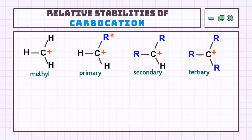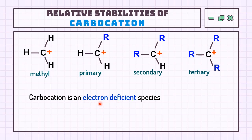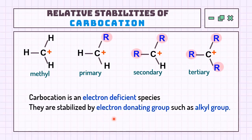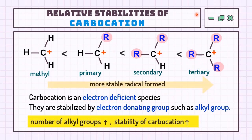Carbocations can be defined as positively charged ions where the carbon has only six electrons in its valence shell. There are four classes — methyl, primary, secondary, and tertiary — same as free radicals. Since carbocations are also electron-deficient, their stability is also determined by the number of electron-donating alkyl groups. The most stable is tertiary with three alkyl groups, followed by secondary with two, primary with one, and the least stable is methyl, which has no alkyl groups attached.